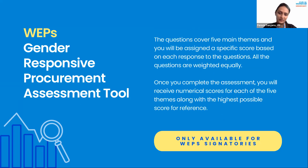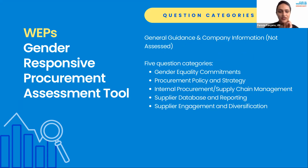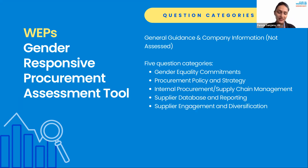The GRP assessment tool is couched in WEPs principle five — enterprise development, supply chain, and marketing practices — specifically the part focusing on procuring from women-owned and women-led businesses, and from gender-responsive enterprises. The GRP assessment tool is a practical, free self-assessment allowing companies to assess their progress on policies and practices relating to gender-responsive procurement. Available exclusively to WEP signatories, the tool consists of 31 questions to input and collect relevant data, identify gaps, and highlight areas for improvement, for which you receive an individual scorecard. The questions cover five main themes: gender equality commitments, procurement policy and strategy, internal procurement and supply chain management, supplier database and reporting, and supplier engagement and diversification.